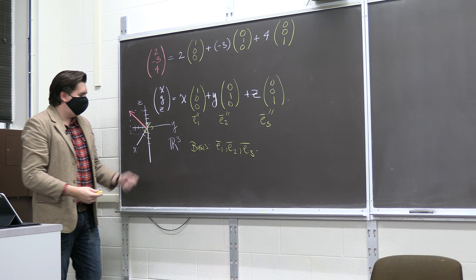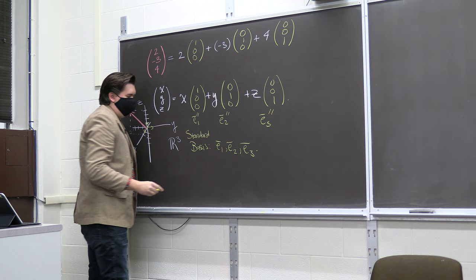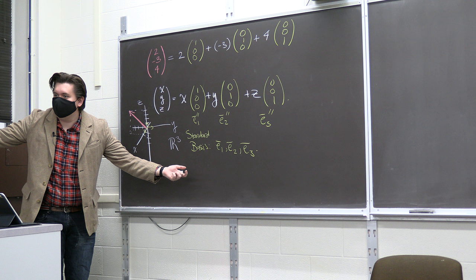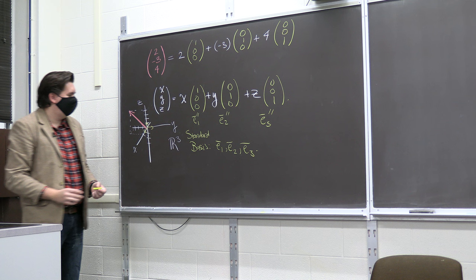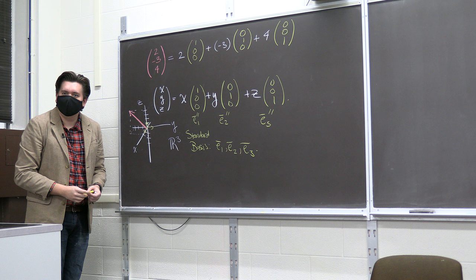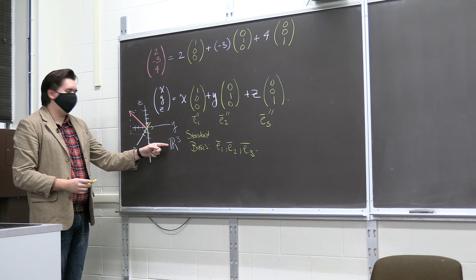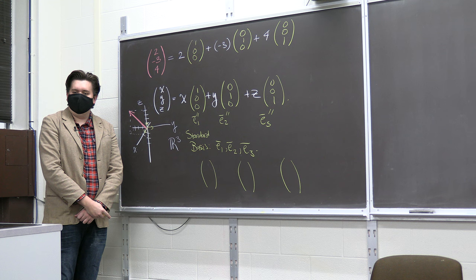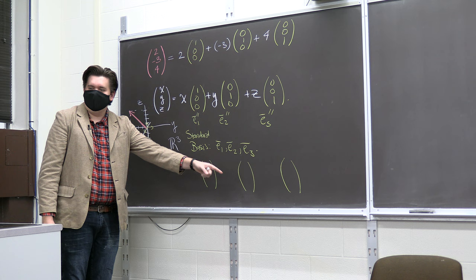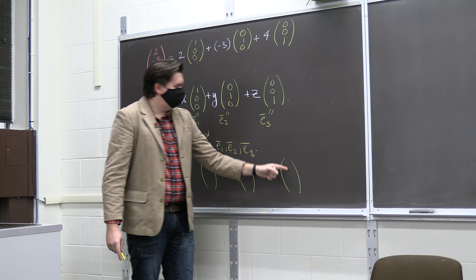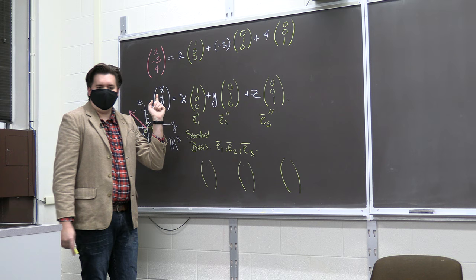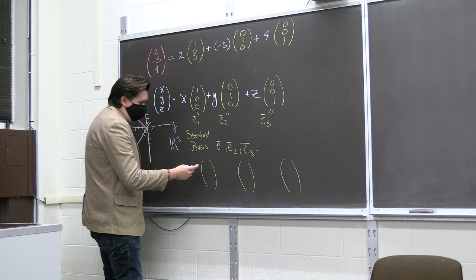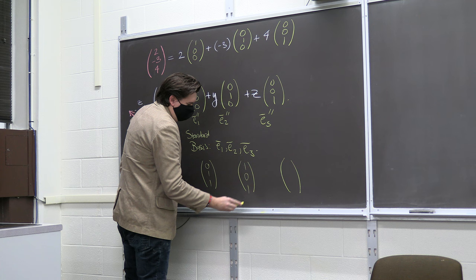In some sense this is the natural, 'god-given' basis — we call it the standard basis. But you can pick some other basis if you want. What are three other vectors that could give you a basis for R3? For example, just scaling by two gives (2,0,0), (0,2,0), (0,0,2) — sure, that works, but it's not very interesting. Let's come up with something more interesting.